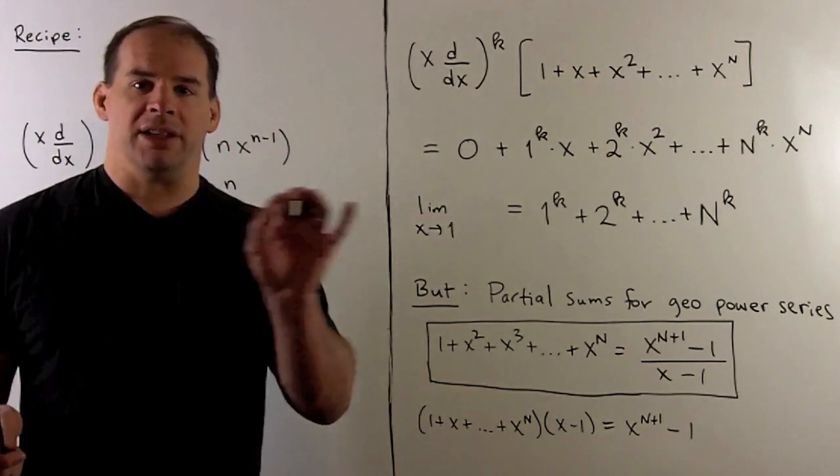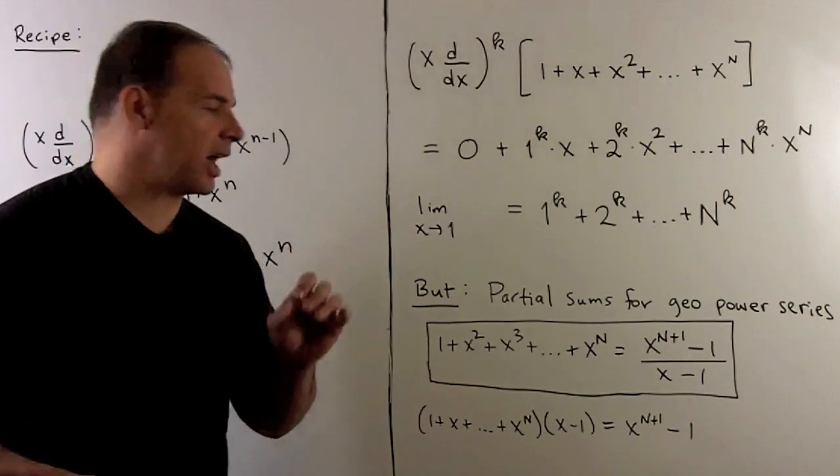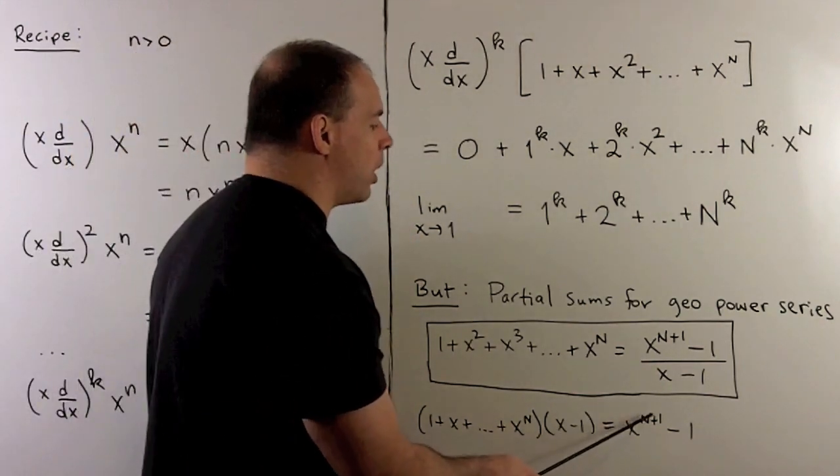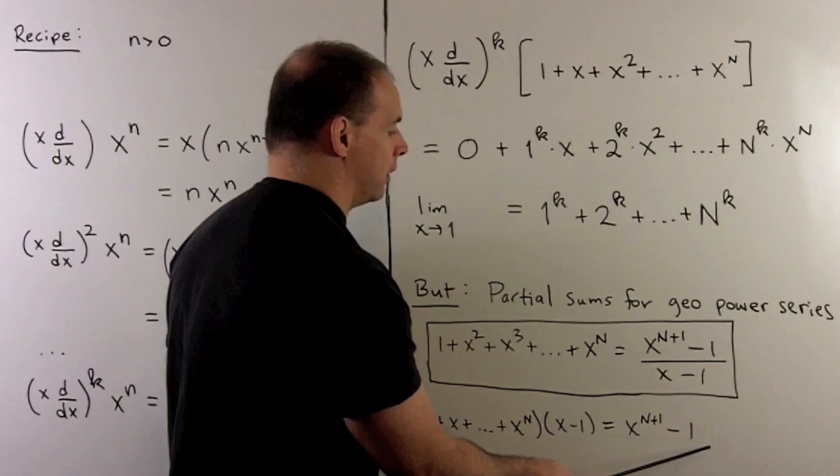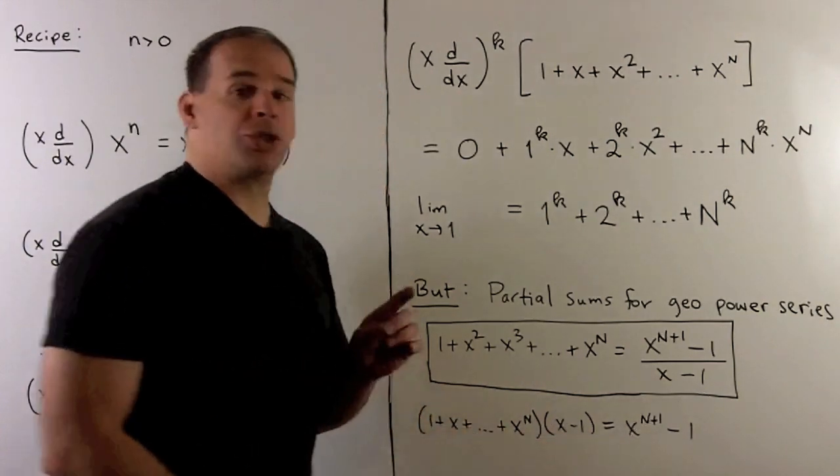The x^(n+1) and the minus 1. So we just divide by (x-1) to get our formula. So that's our recipe.